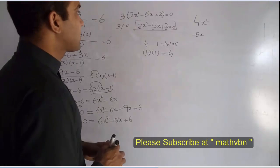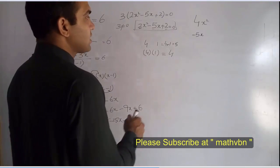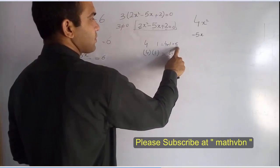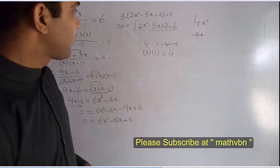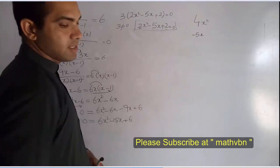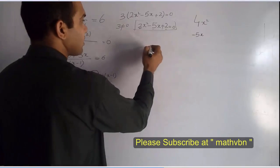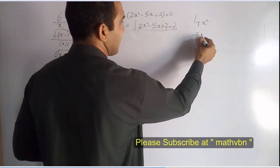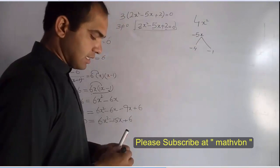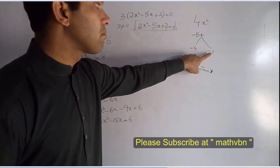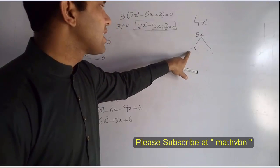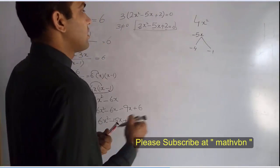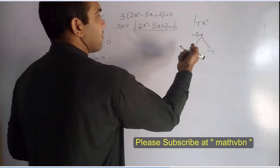But here the middle term is minus 5x, and since we need a negative sum, we cannot use positive 4 and positive 1. We will use minus 4 and minus 1 — same values but negative. Minus 4 times minus 1 equals positive 4, and minus 4 plus minus 1 equals minus 5. So we take these two factors.